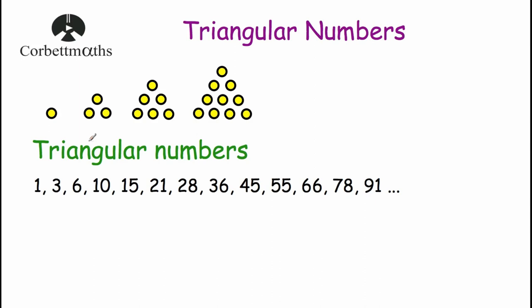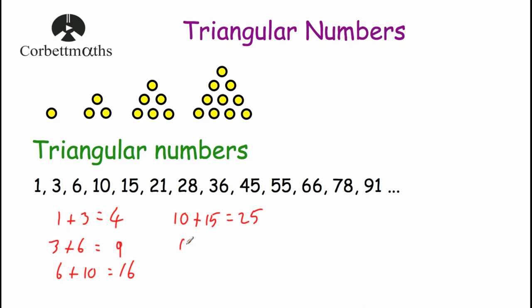Now let's go back and look at our triangular numbers. One interesting thing with triangular numbers is if you add two consecutive triangular numbers, you'll get square numbers. So one plus three is equal to four; three plus six is equal to nine; six plus ten is equal to sixteen; ten plus fifteen is equal to twenty-five; fifteen plus twenty-one is equal to thirty-six, and so on. As you can see, four, nine, sixteen, twenty-five, thirty-six - they're all square numbers.